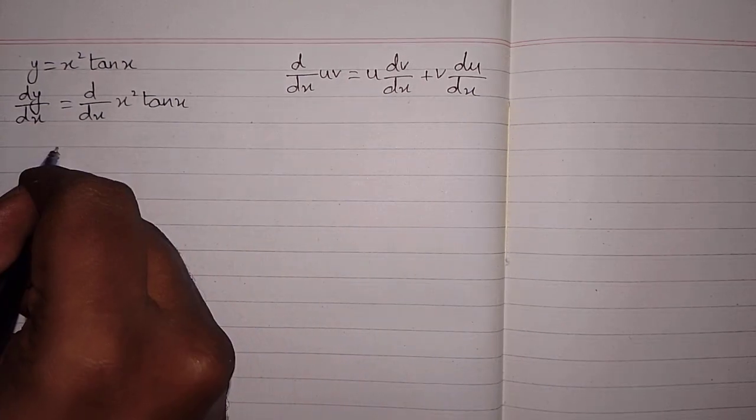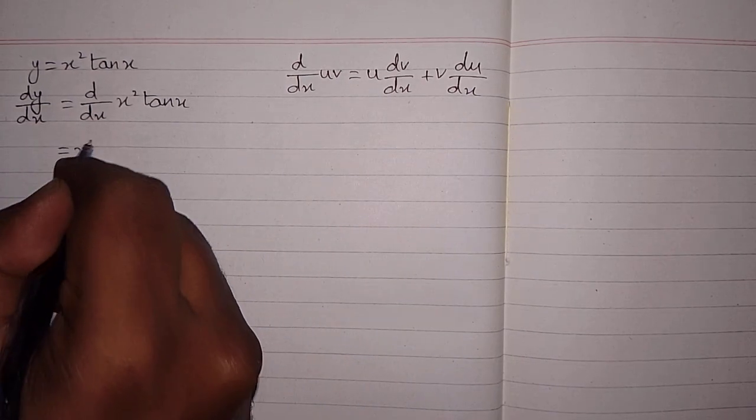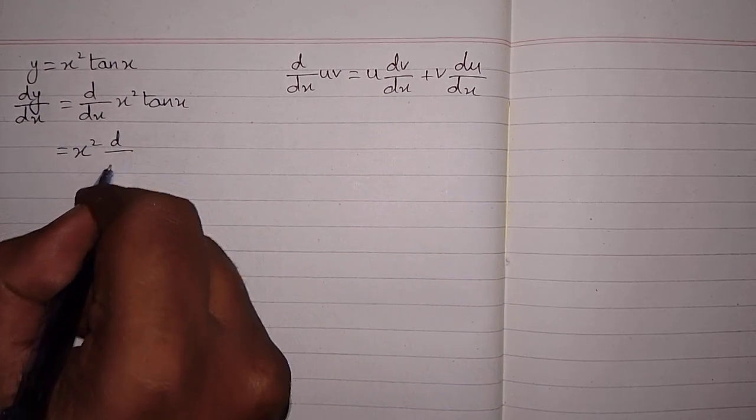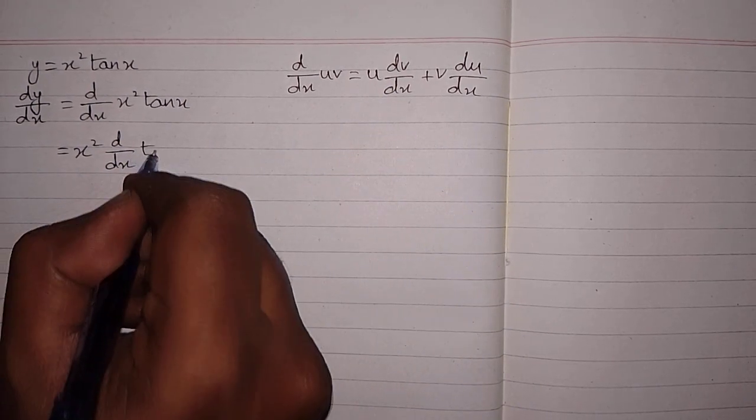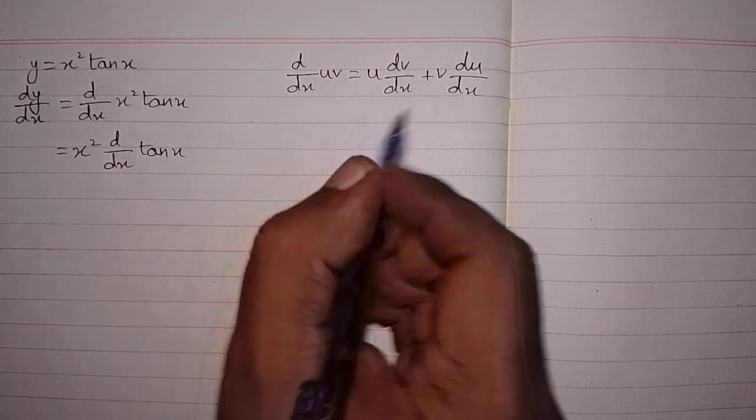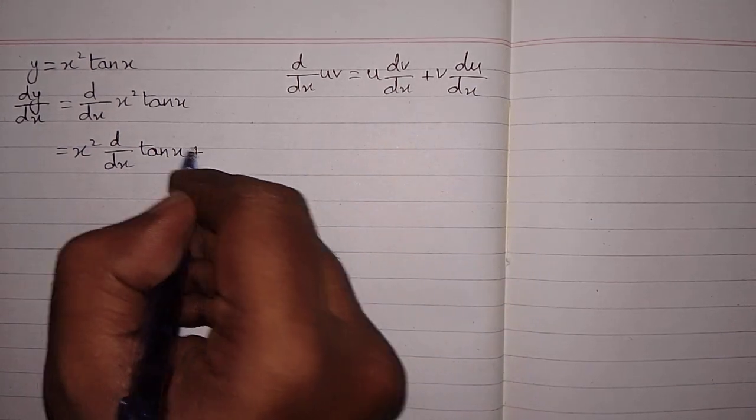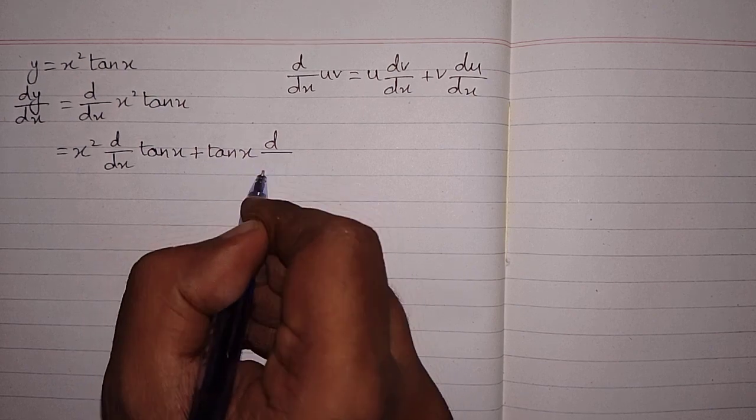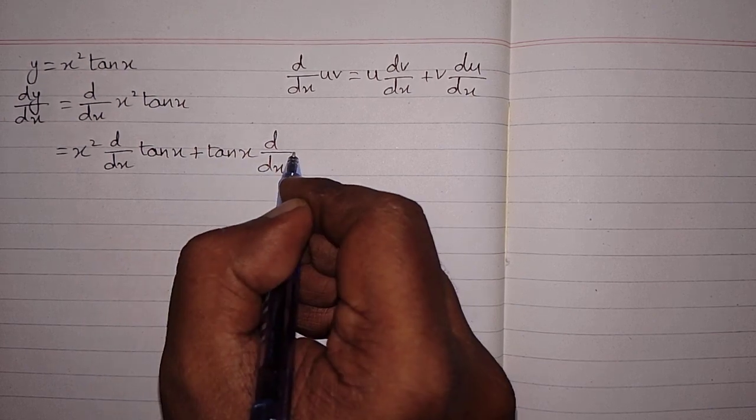So first we will write u, which is x squared, then the derivative of v, which is d/dx of tan x, and then plus v, which is tan x, and then the derivative of x squared.